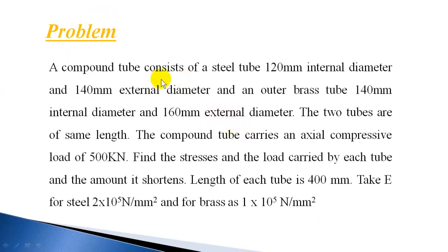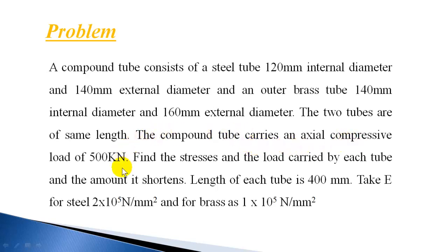So this compound tube consists of a steel tube, 120 mm internal diameter and 140 mm external diameter, and this is within another brass tube of 140 mm internal diameter and 160 mm external diameter. They are of the same length, and the length is also given as 400 mm. As a result of this load, you need to find out the stresses induced and also the reduction in length. Because this is a compressive load, the length will reduce. Young's modulus of both the materials are given.